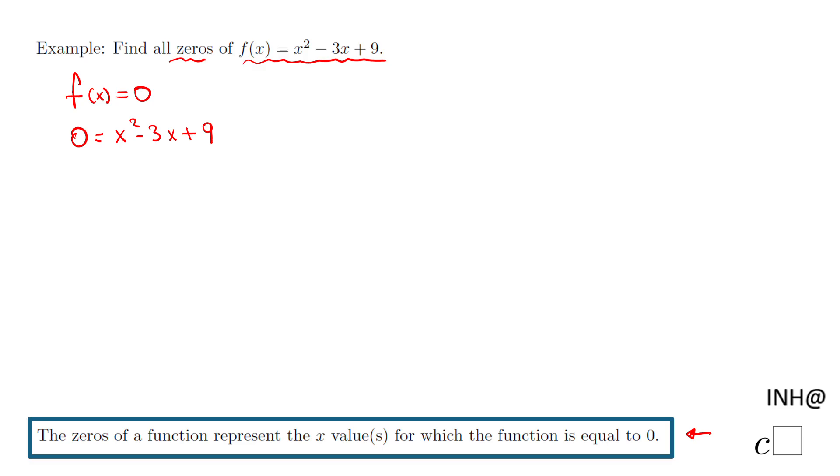How do we solve this quadratic equation? One way I will always try will be factoring. I'm looking for two numbers whose product is 9 and the sum is negative 3. Do we have any two numbers for which the product is 9 and the sum is -3?